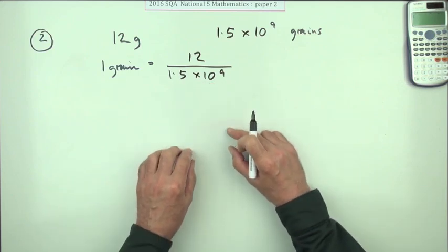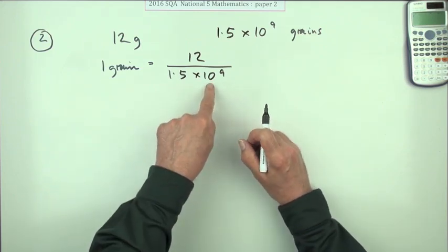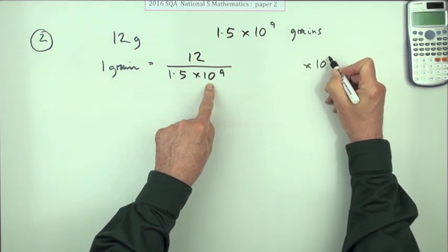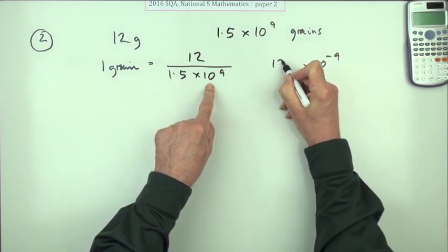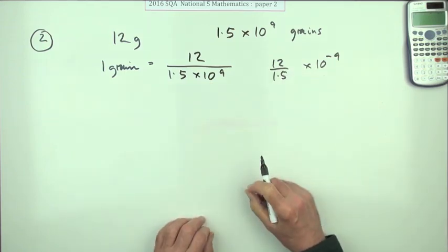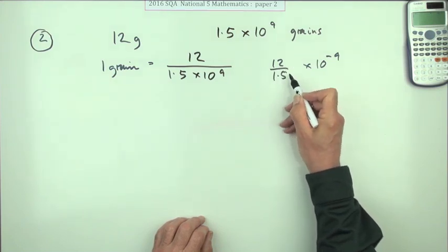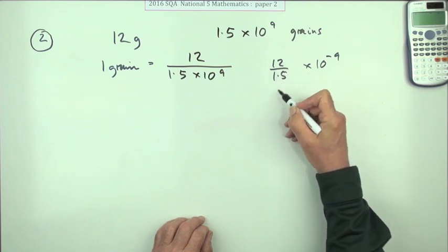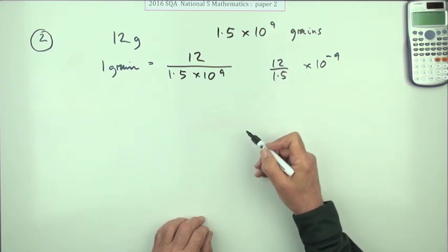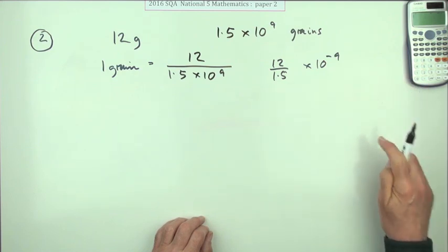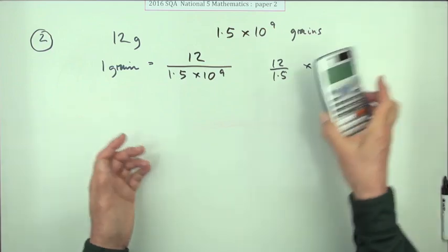That 10 to the 9 underneath would become a 10 to the negative 9 on top, and you'd just have to work out 12 divided by 1.5. Then you could think how many one and a halves are in 12, or you could make it into 120 over 15 and cancel it down. That would come to 8, and then you'd have 8 times 10 to the negative 9.